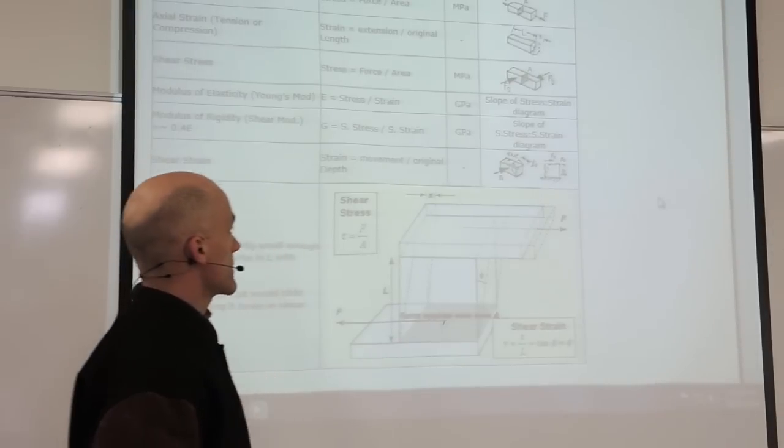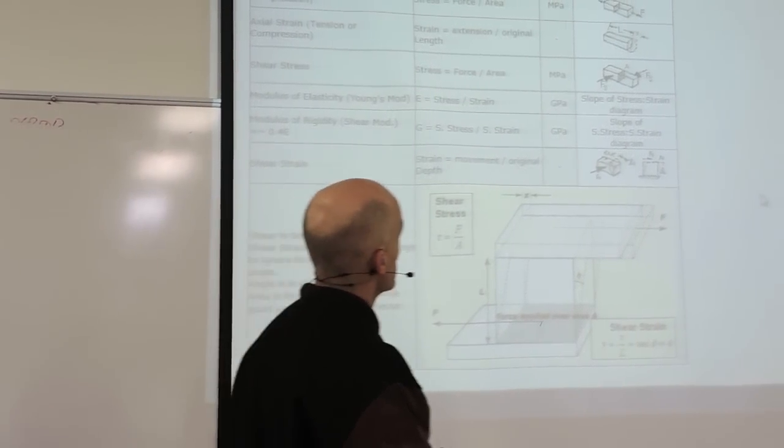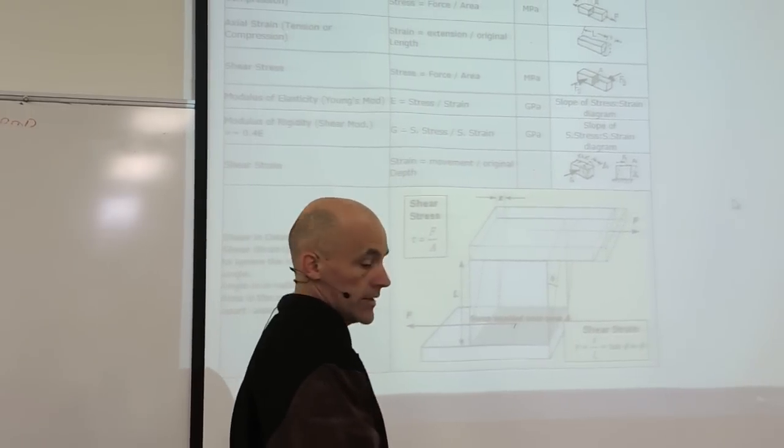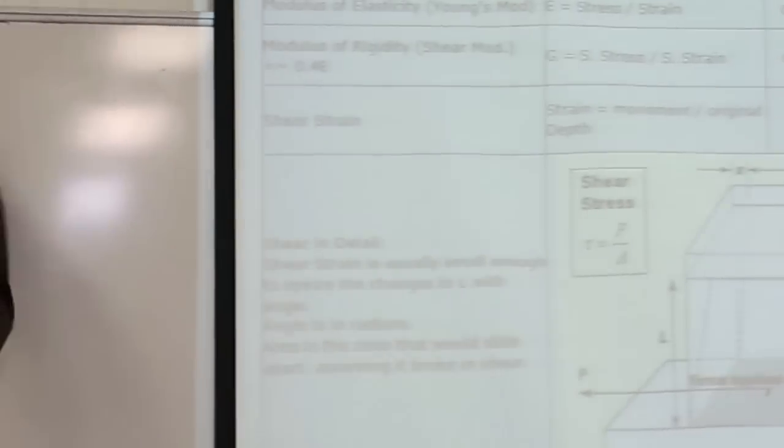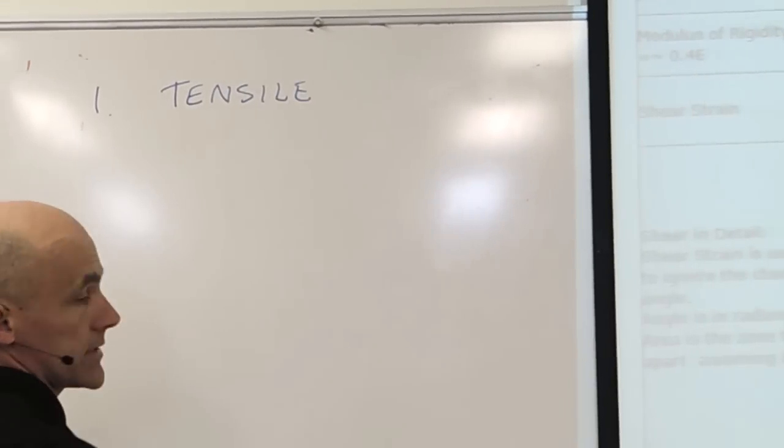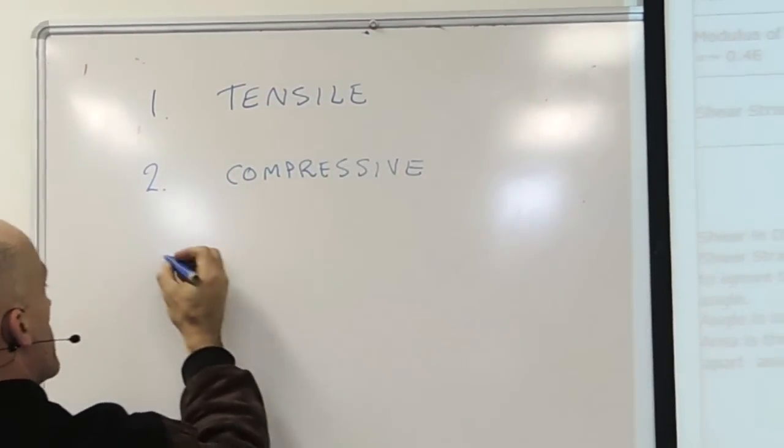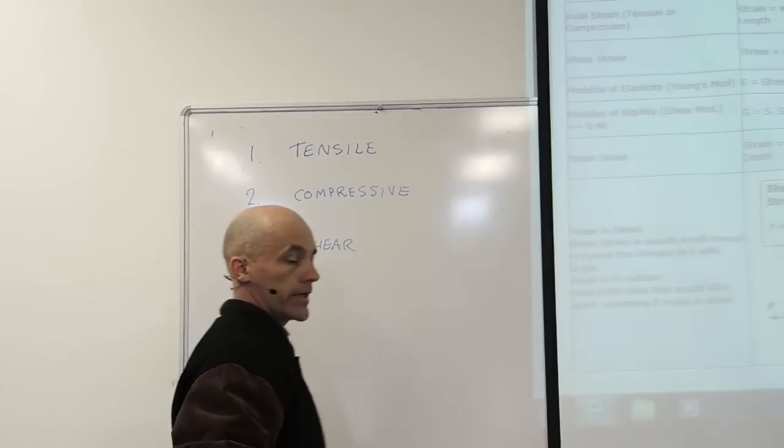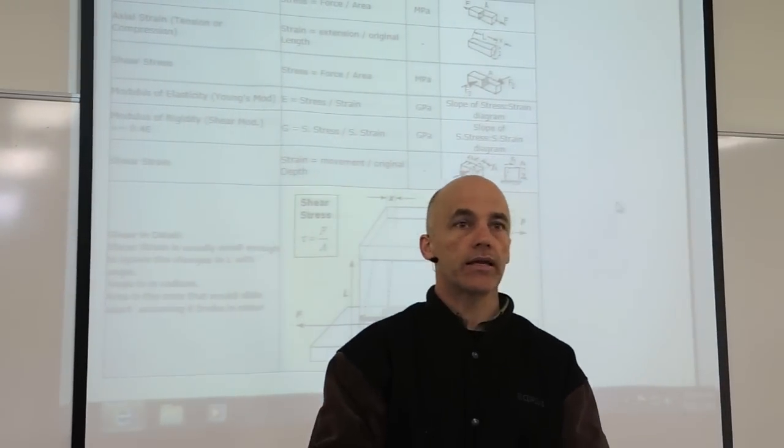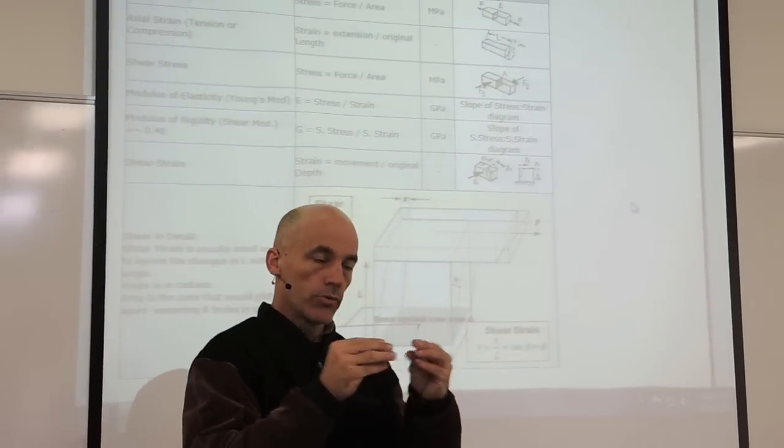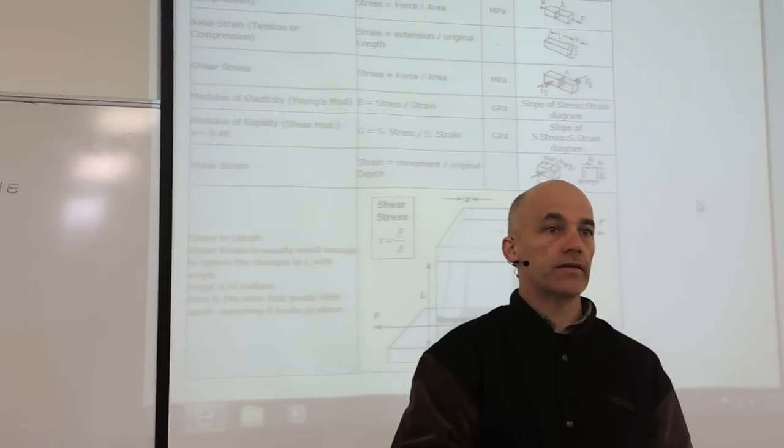This table is just highlighting the different types of stress, and we're going to be going through different questions based on these stresses. But the most important thing is that there's only three types of stress. There's tensile stress, compressive stress, and shear stress. That's it. All the other types, like torsion and bending, are combinations of those. But you can only either pull something or squash something or slide something, and that's it.